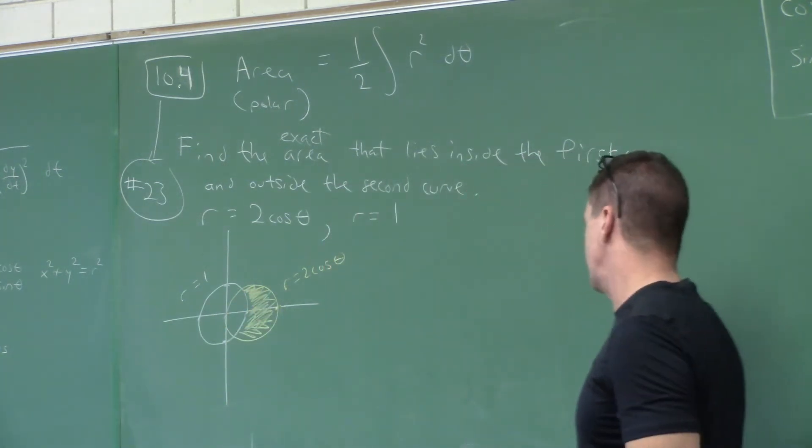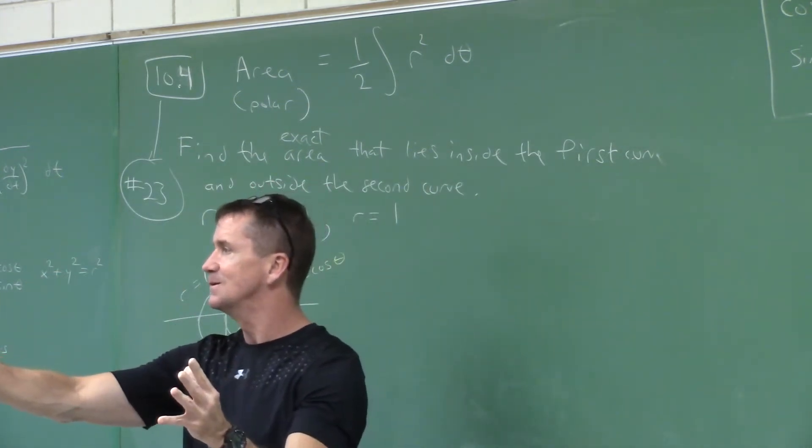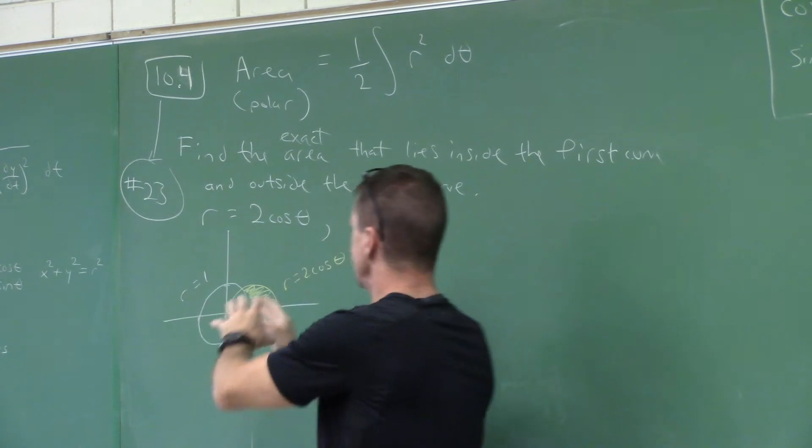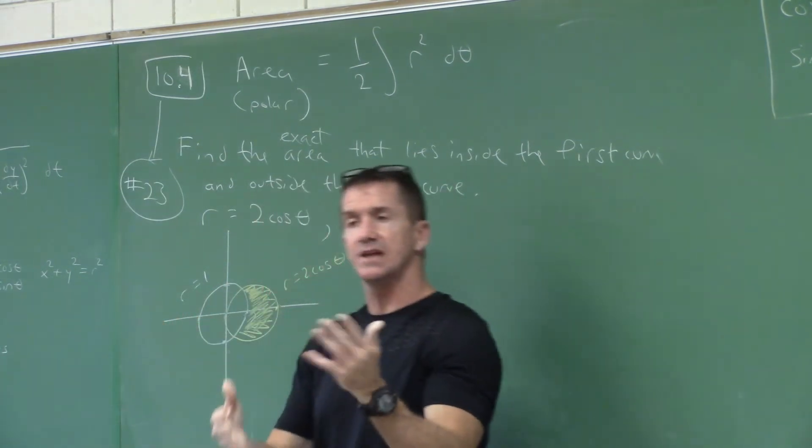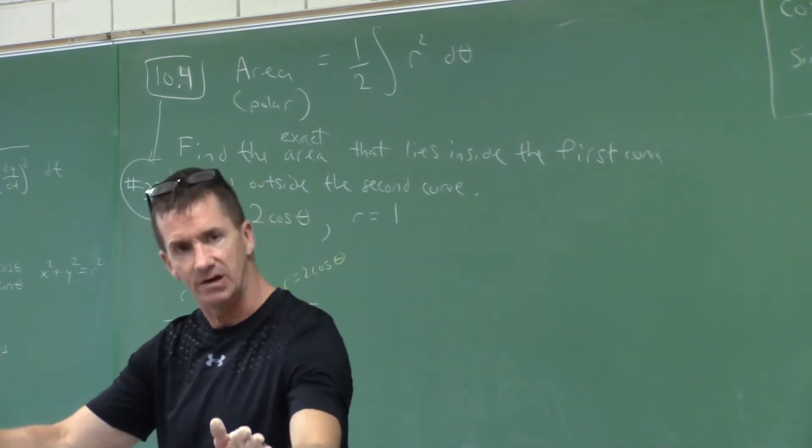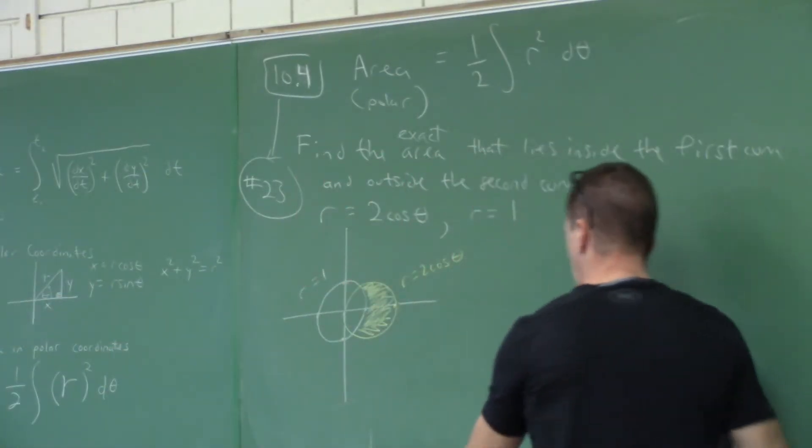What would be the setup? Well, just like we've done anything in calculus, it will have to be a subtraction. We'll subtract the outer minus the inner. Let's just start, before we get the limits of integration, which I think you're going to find easy now. Can you help me set up the outer minus the inner?